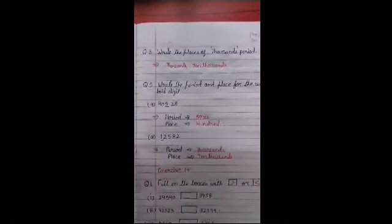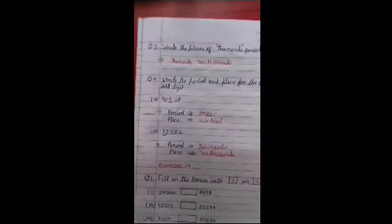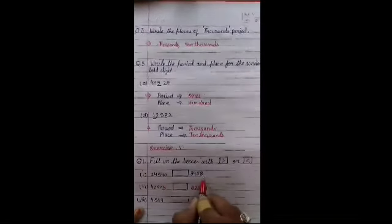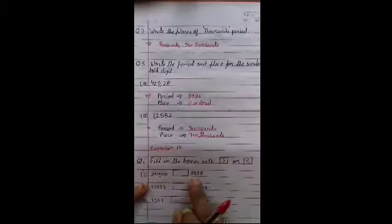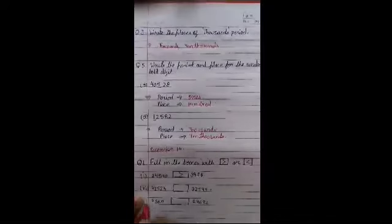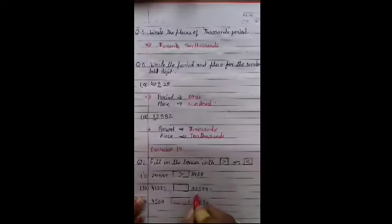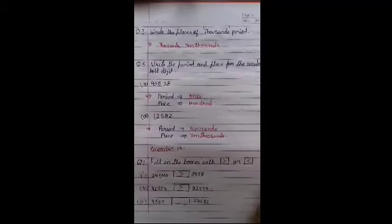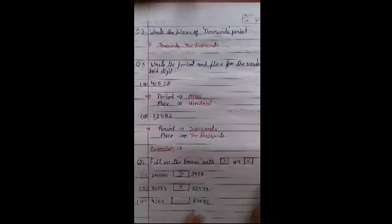Now, exercise one point four of your book. Filling the boxes with greater than and less than. So, ab ab hum yaha dekhenge. Twenty four thousand five hundred forty hai, aur ye hai three thousand four hundred fifty eight. Ye twenty four thousand aur ye three thousand four hundred hai. Tho bada kaunsa ho gaya isme hai? Twenty four thousand. Third question hai, forty two thousand five hundred twenty three and thirty two thousand five hundred ninety nine. Toh isme kya bada hai? Forty two aur thirty two toh forty two thousand five hundred twenty three jo hai, woh greater hai, bada hai. Ab four thousand five hundred sixty nine and twenty four thousand six hundred eighty two. Toh isme kya bada hai, twenty four thousand six hundred eighty two jo hai, woh bada hai sankhya hai.